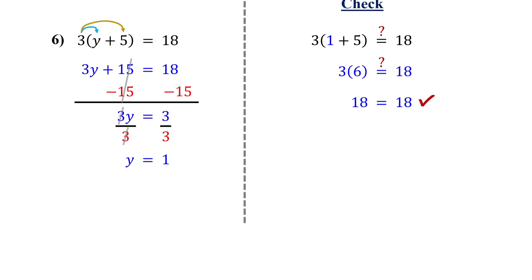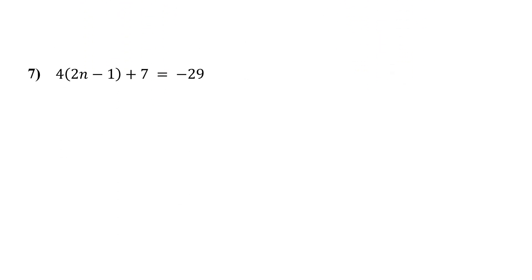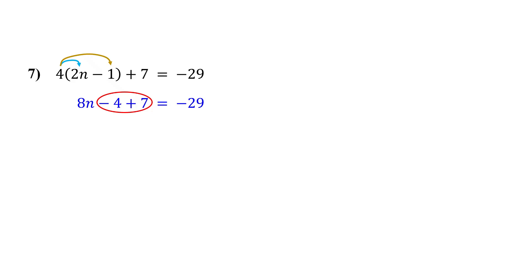Let's look at another one, but this time it has like terms too. Feel free to pause the video and give it a try. Just like before, the first step is to remove the parentheses using the distributive property. Distribute the 4 to both 2n and negative 1. 4 times 2n is 8n, and 4 times negative 1 is negative 4. Bring down the rest of the equation. Next, combine the like terms on the left: negative 4 plus 7 gives us 3.